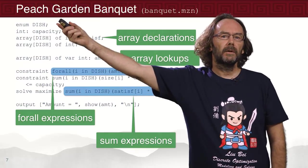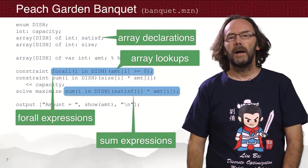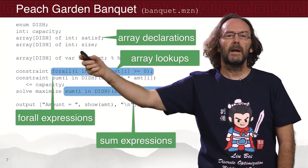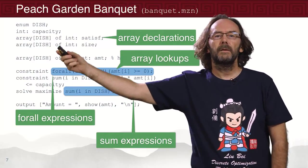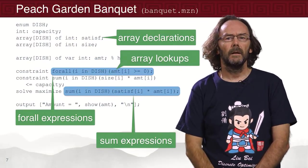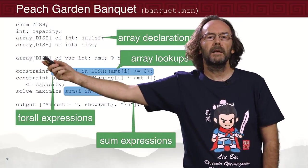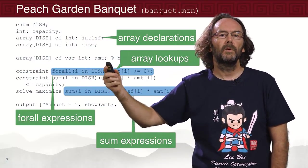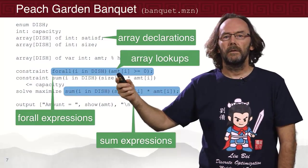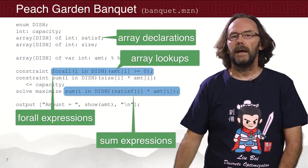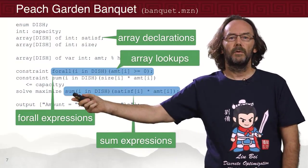Here's our model. We've got an enumerated type telling us the set of dishes we're talking about, then the capacity of the table, then two arrays — the first time we've seen array declarations — associating with each dish a satisfaction rating and a size. The important decisions we have to make are how many of each dish we're going to put on the table. So here is an array declaration of variable integers for those decisions. We're saying that the amount of each thing has to be greater than or equal to zero, and we sum up for each dish the size times the amount and say it's less than the capacity. Our objective is to maximize the total satisfaction.